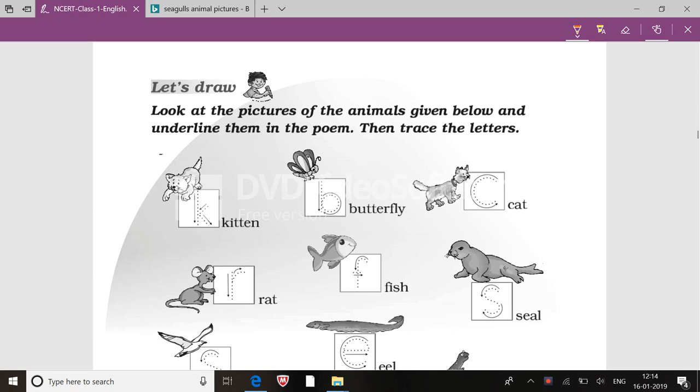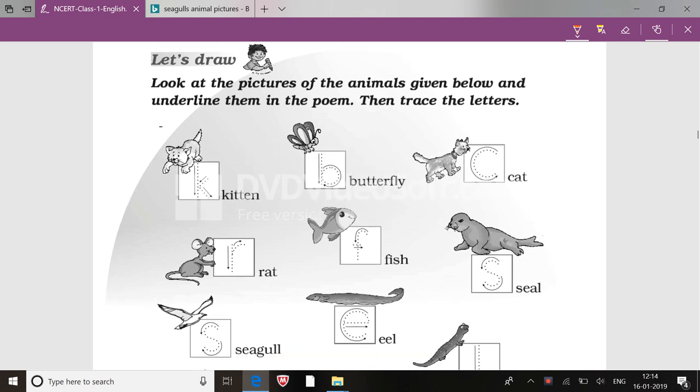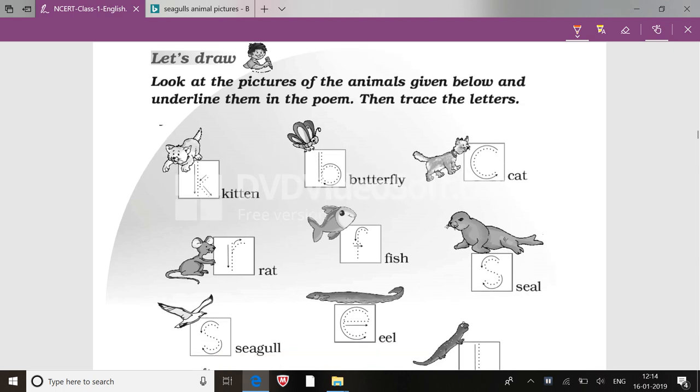Welcome to Learn with Fun, NCERT Marigold Class 1, Unit One Little Kitten. Page number 31, Let's Draw. Look at the pictures of the animals given below and underline them in the poem.